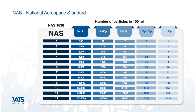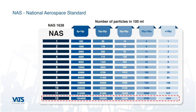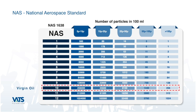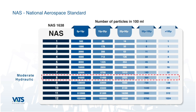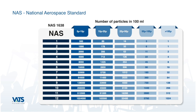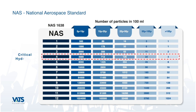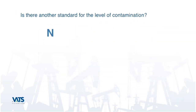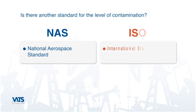Each band stands for a specific range of particle size, and the number of particles in a volume of 100 ml are measured. NAS 1 is the cleanest whereas NAS 12 is the most contaminated. Virgin oil or fresh barrel oil is usually NAS 10. For systems with moderate hydraulics using proportional control valves, NAS 8 is recommended. For critical hydraulic systems with servo controlled valves, you need NAS 5 or better.